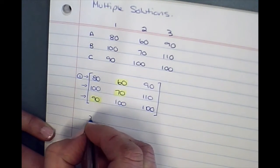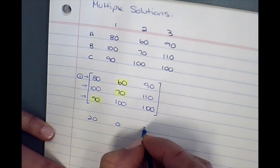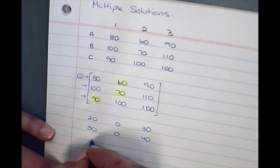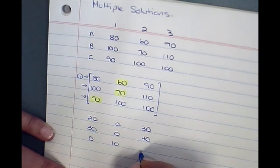So we'll get 20, 0, 30, 30, 0, 40, 0, 10, 10.